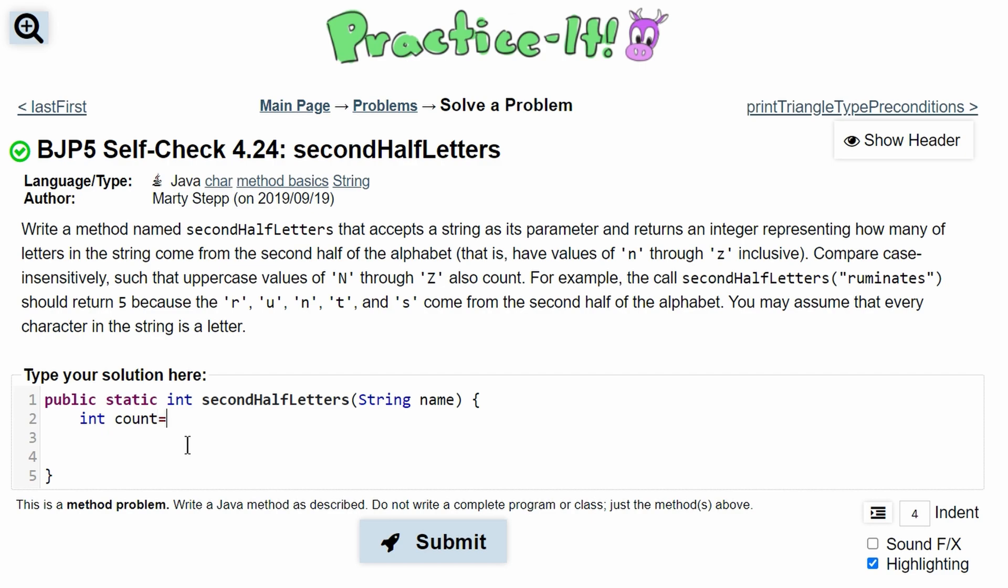And this for loop is going to go through our entire passed in string and look at every single character and see if that's part of the second half of the alphabet.